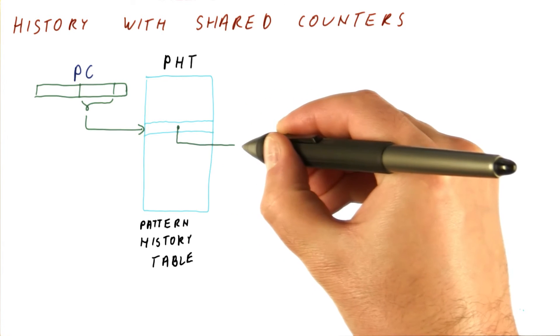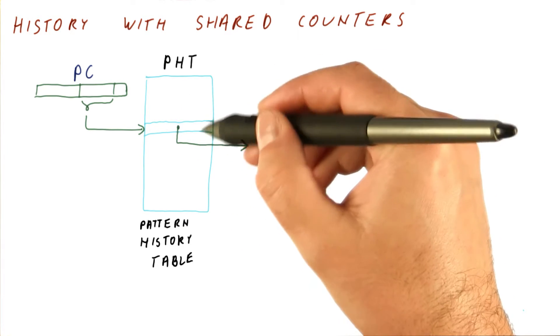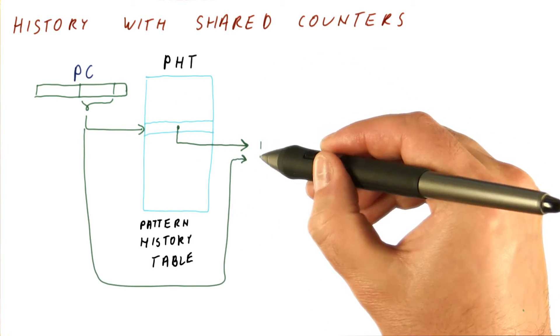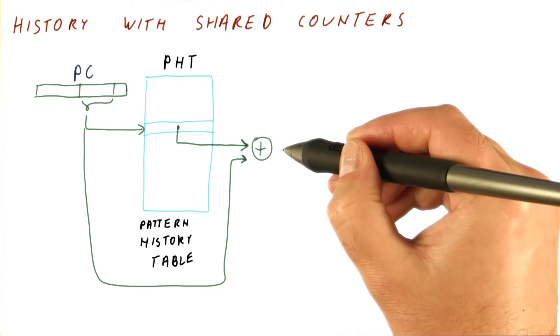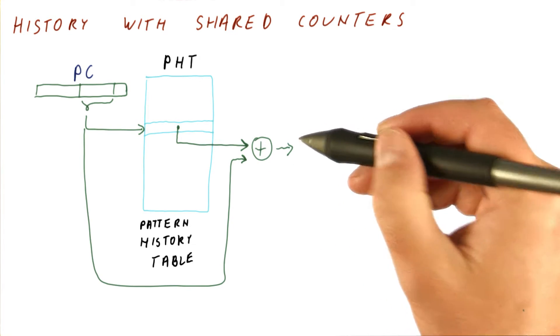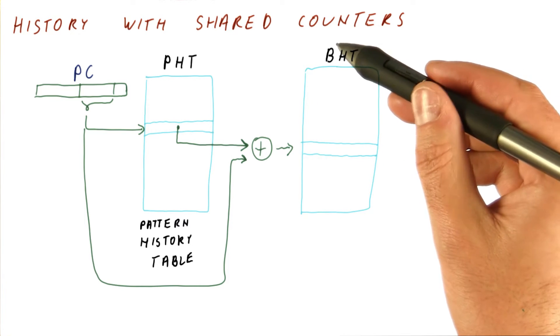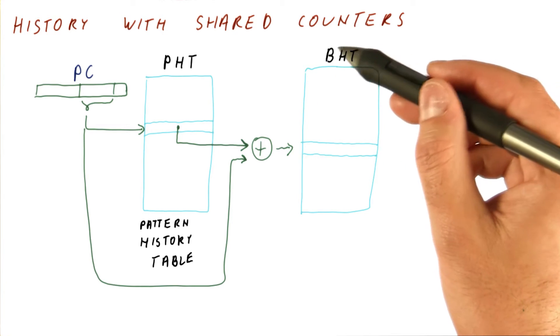So what we do is we take this history from this table, combine it in some way, usually using an XOR with the bits of the PC, and use that to index into what we still will call the branch history table.